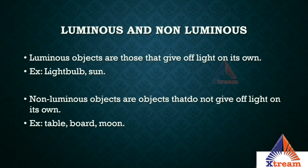Coming to luminous and non-luminous objects — objects that can emit energy by themselves are known as luminous objects. These objects cause the sensation of light and are visible as they emit light on their own. For example, the sun, candles, and light bulbs are some examples of luminous objects.